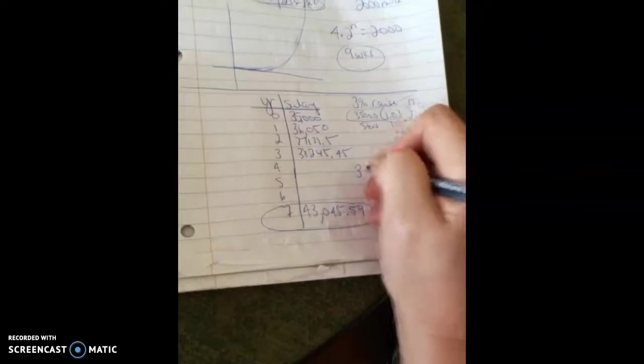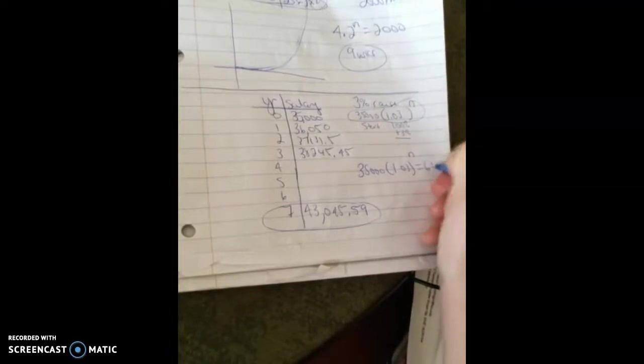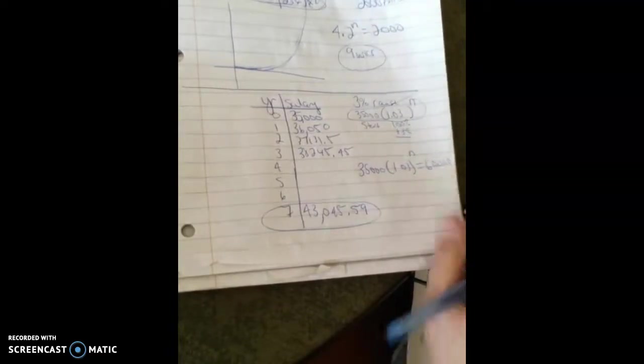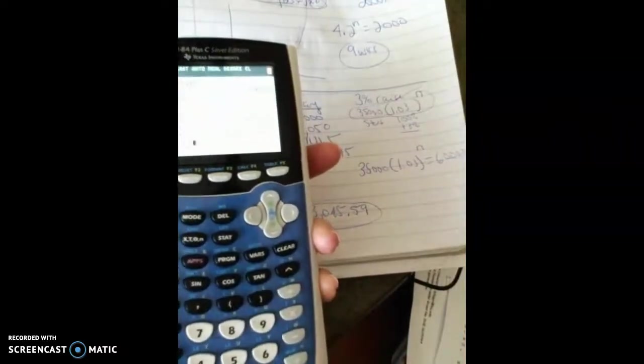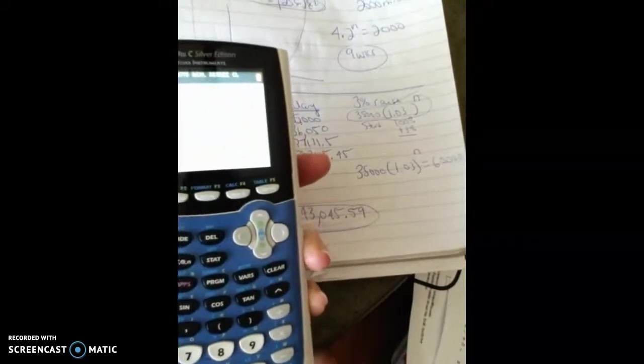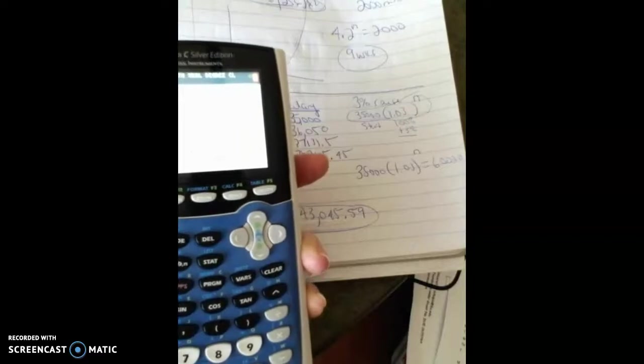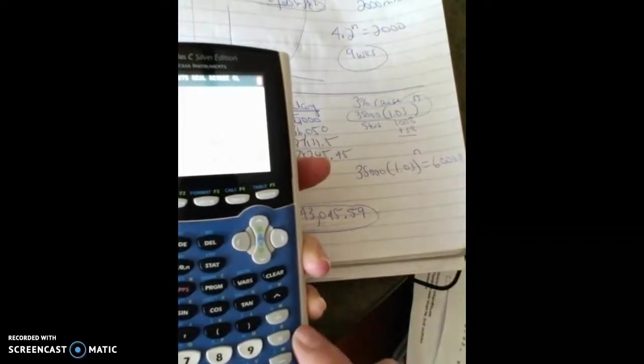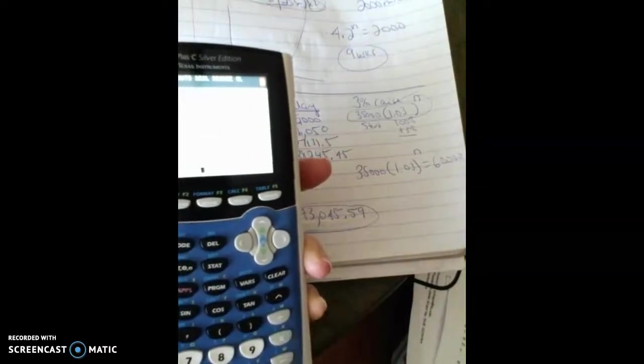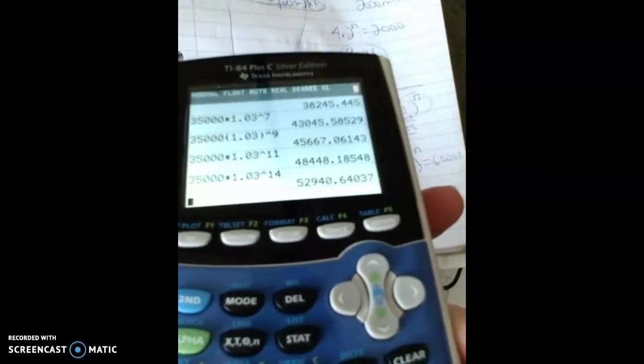And again, if I wanted to figure out when am I going to make, say, $60,000, I would have to keep guessing until it equals $60,000. So that might take me a while. So I might have to take $35,000 and 1.03. I know here, so maybe we'll guess nine. Not even close. So $35,000 times 1.03 raised to the, let's jump to 11. Still not there. $35,000 times 1.03 raised to the 14th. Okay, getting better. And I could keep guessing and testing until I get that into that $60,000 amount.